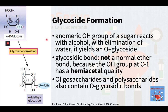When the anomeric OH group of a sugar reacts with an alcohol, with the elimination of water, it yields an O-glycoside — in this case, as shown, alpha-methylglucoside. The glycosidic bond is not a normal ether bond, because the OH group at C1 has a hemiacetal quality. Oligosaccharides and polysaccharides also contain O-glycosidic bonds.